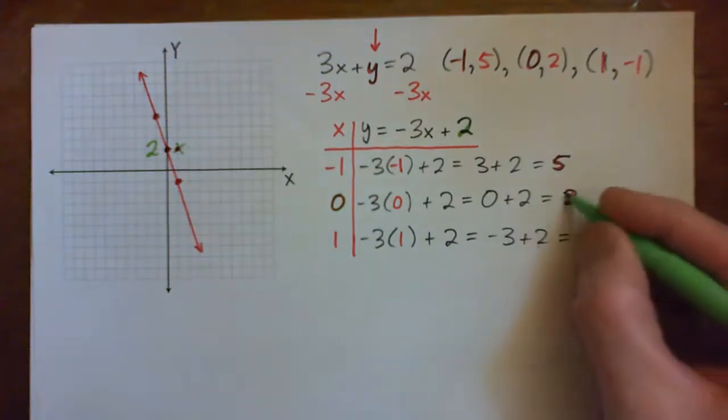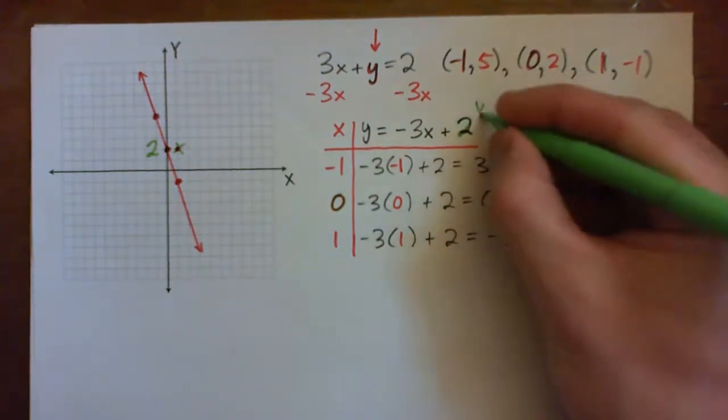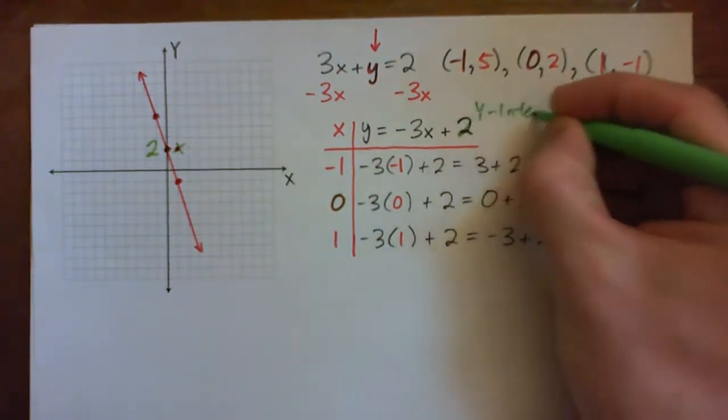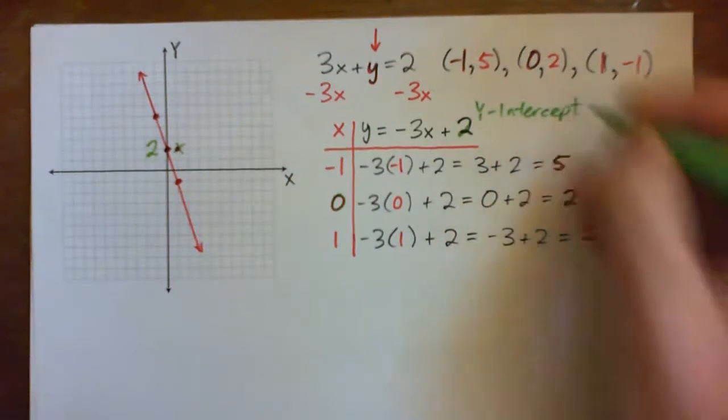See that one, x is 0, y is 2. And so that's called our y-intercept point because that's where it hits the y-axis.